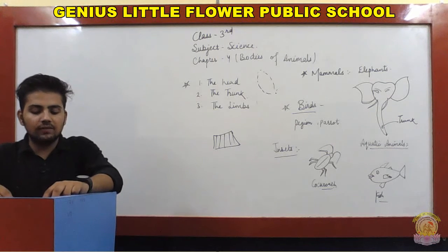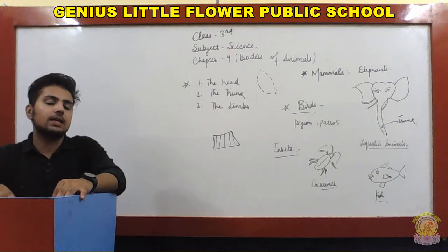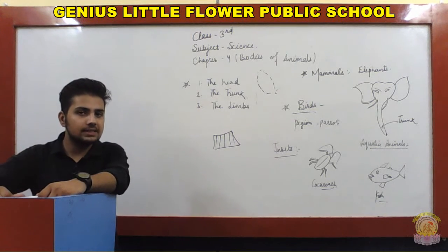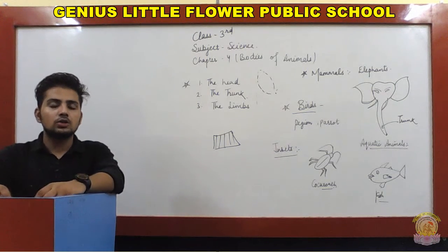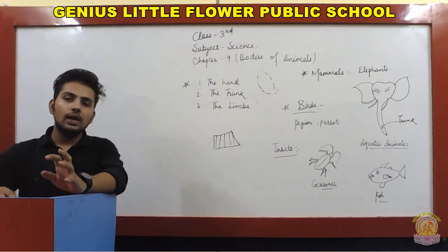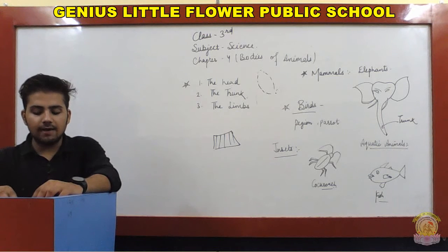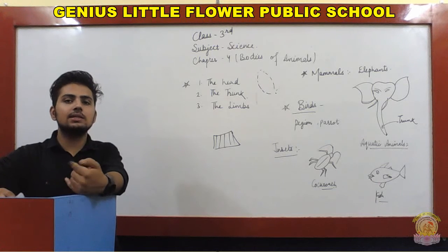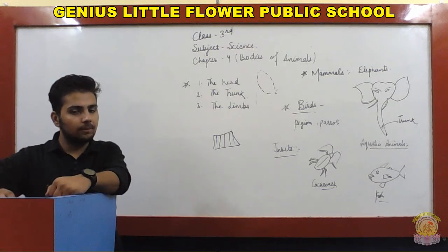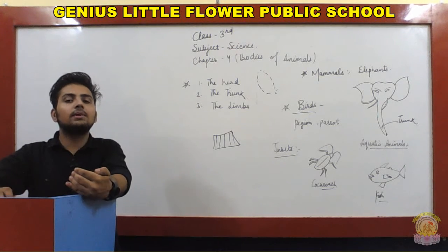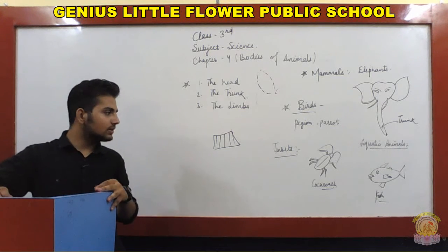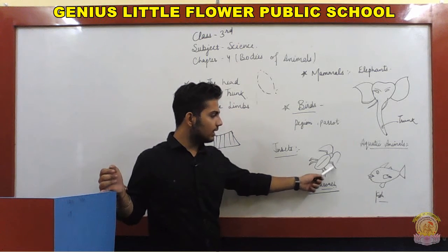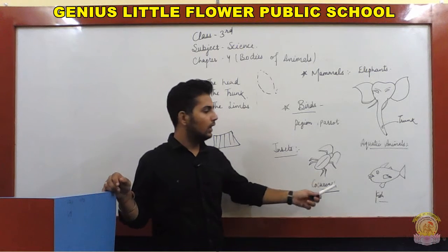Next are insects. Examples of insects are grasshopper, cockroach, and ant. Some animals have six or more legs — they are called insects. Some insects can also fly. For example, a cockroach has six legs and can sometimes fly.